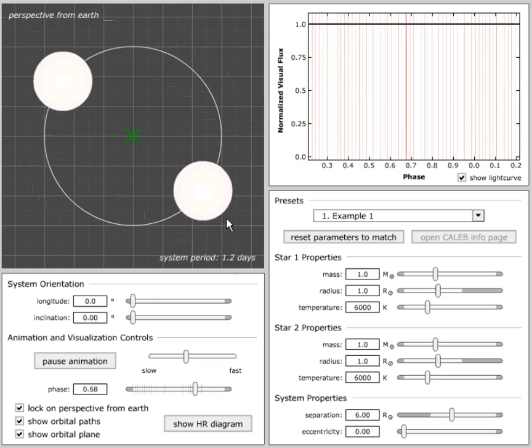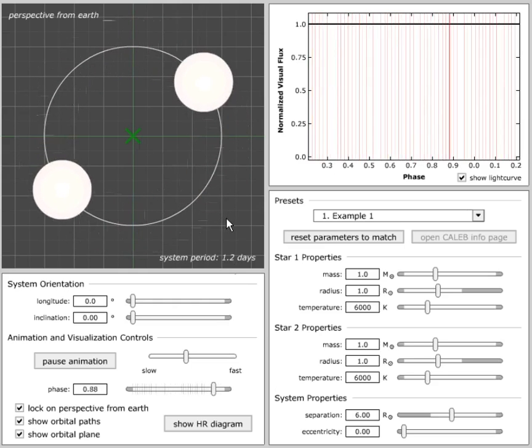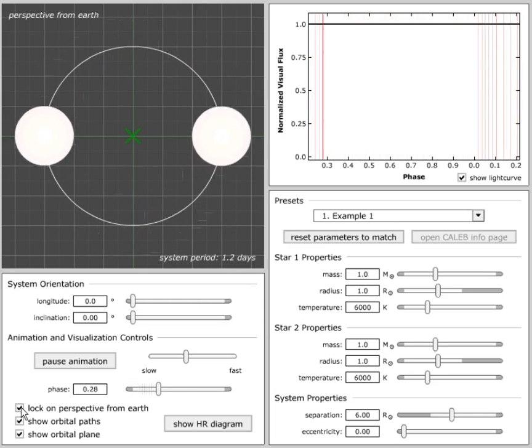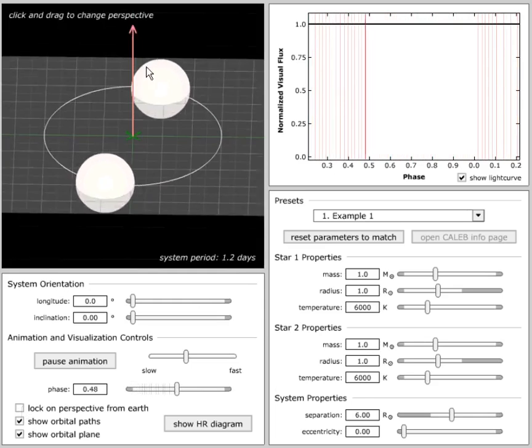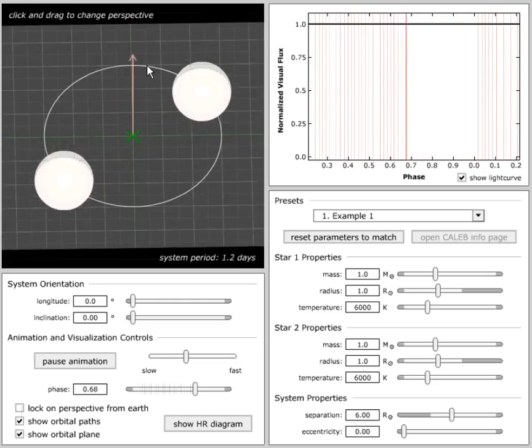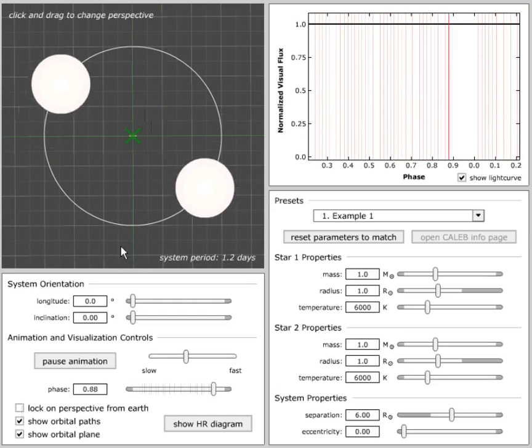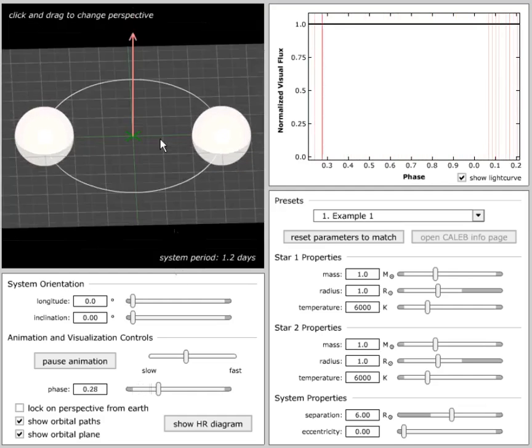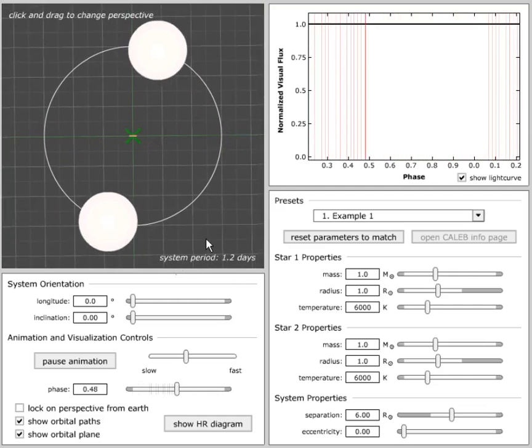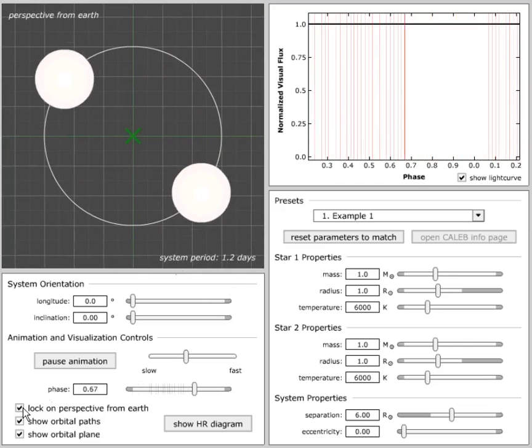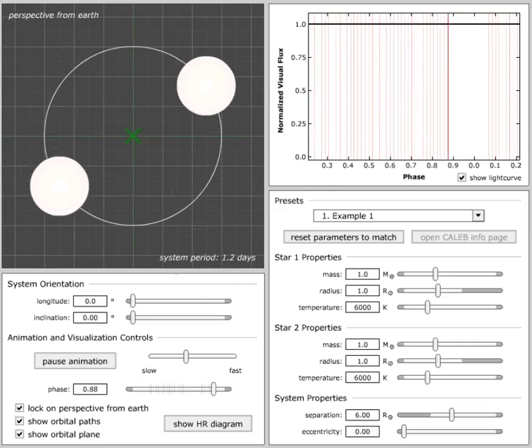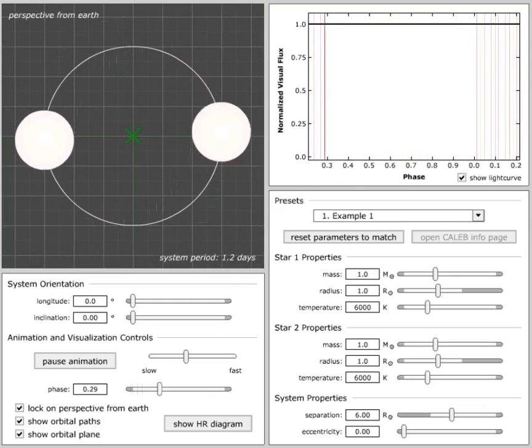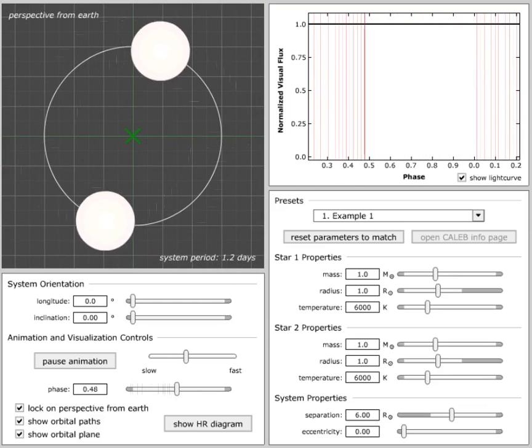Note that both stars are moving counter-clockwise. Is there a system where both move clockwise? And we can unlock the perspective from the Earth, manipulate the system so we are actually seeing it from the opposite direction, and visualize that. Can one star move clockwise and one counter-clockwise? No, because then they wouldn't both be on opposite sides of the center of mass.